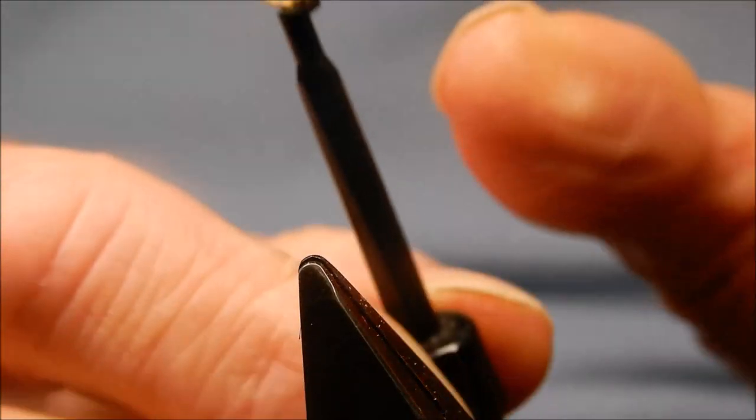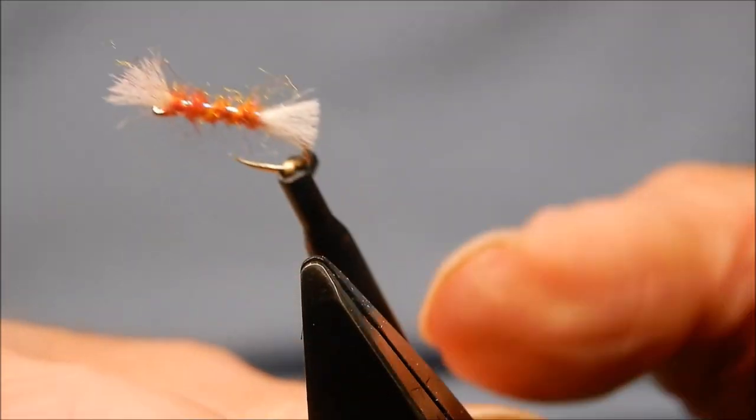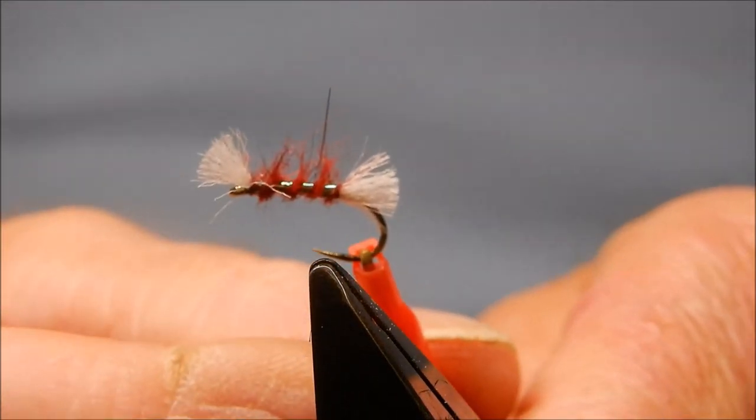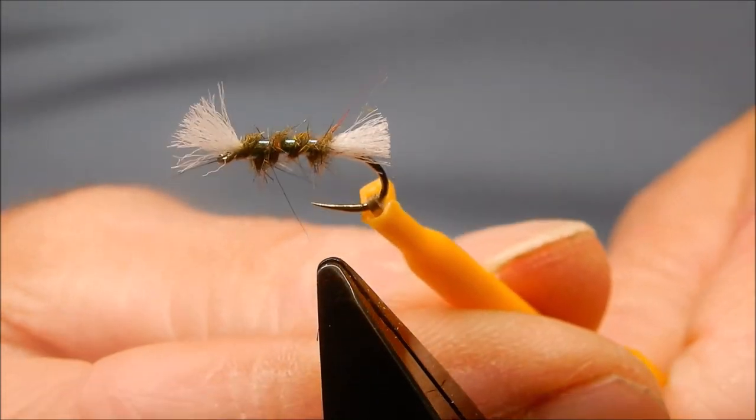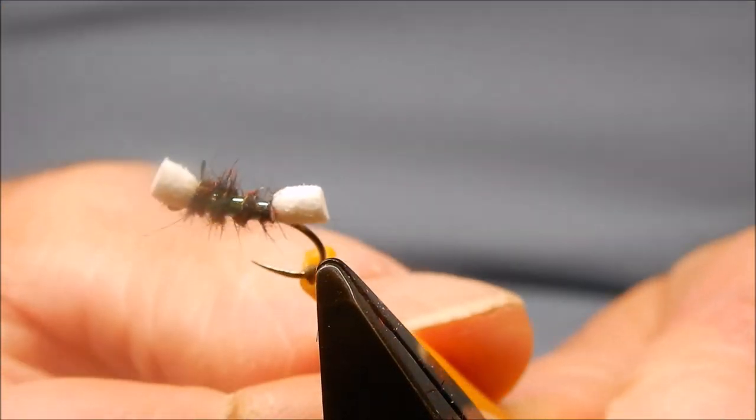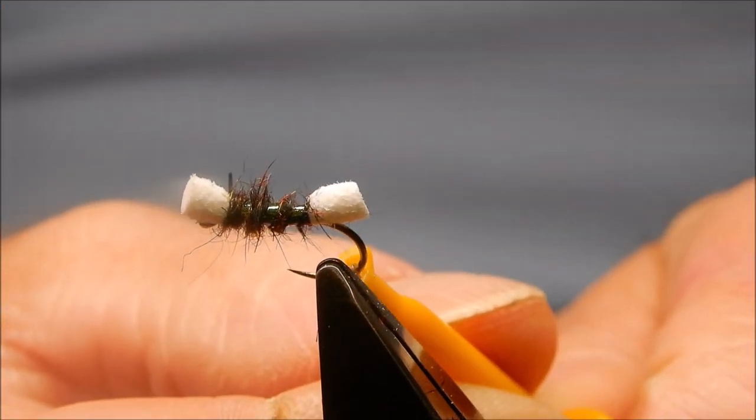Flies come in a variety of colours. The popular colours that I use are orange, hot orange or fiery brown, olive, and black. This one's got foam on it.